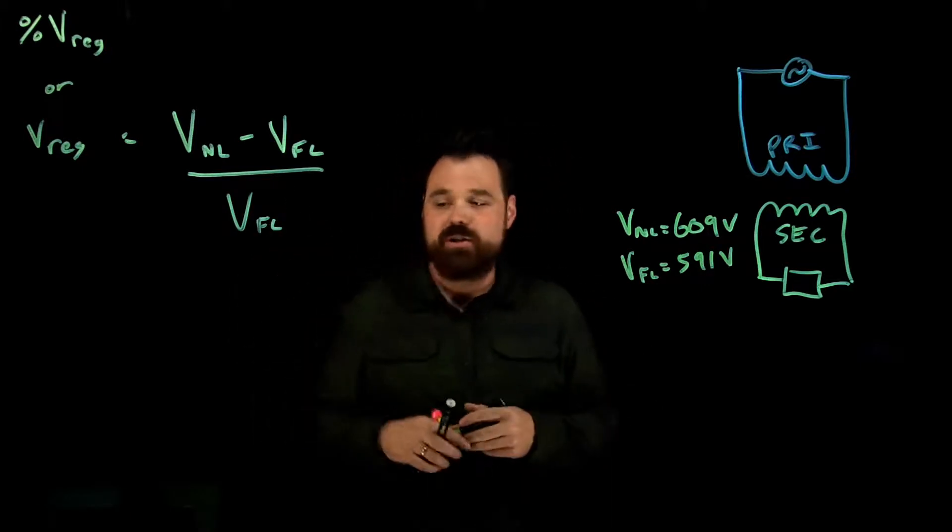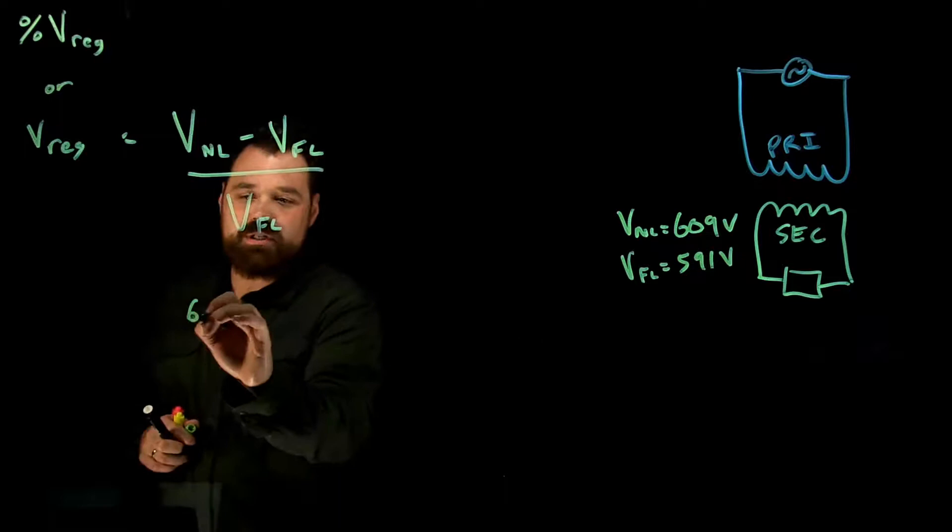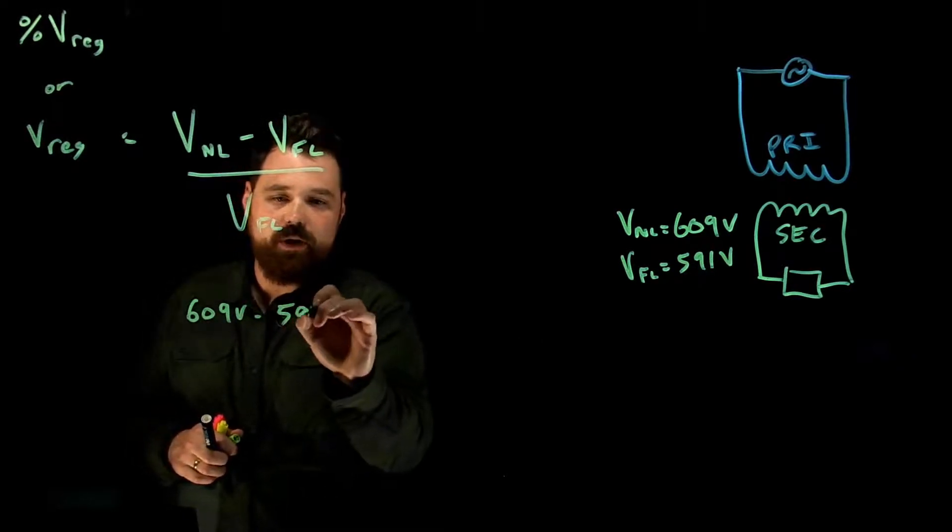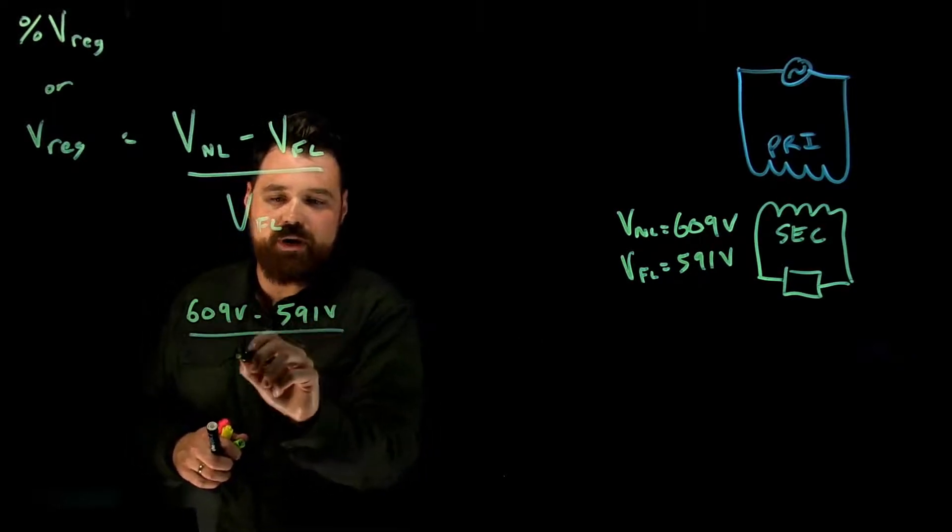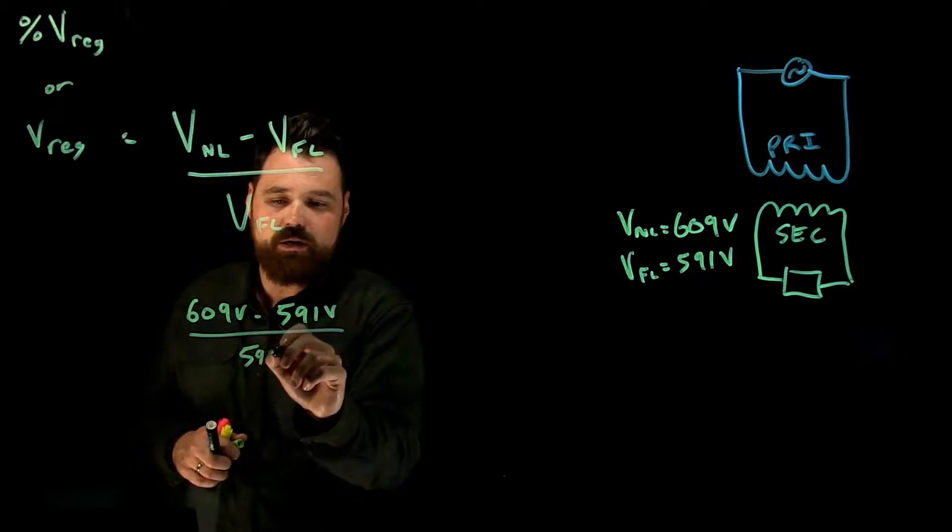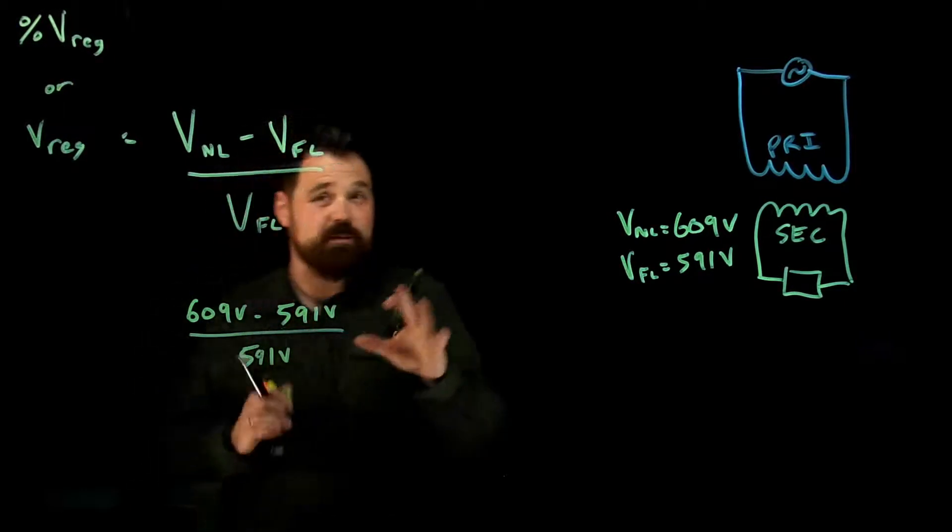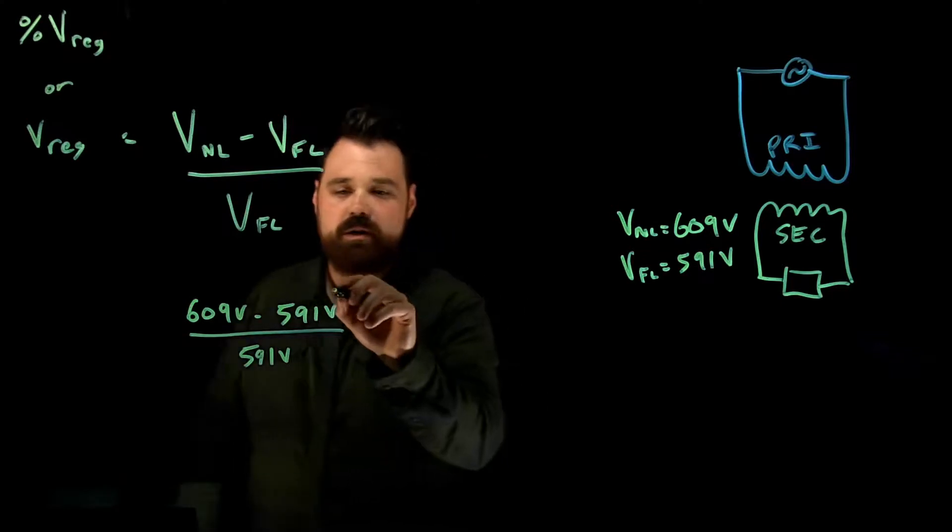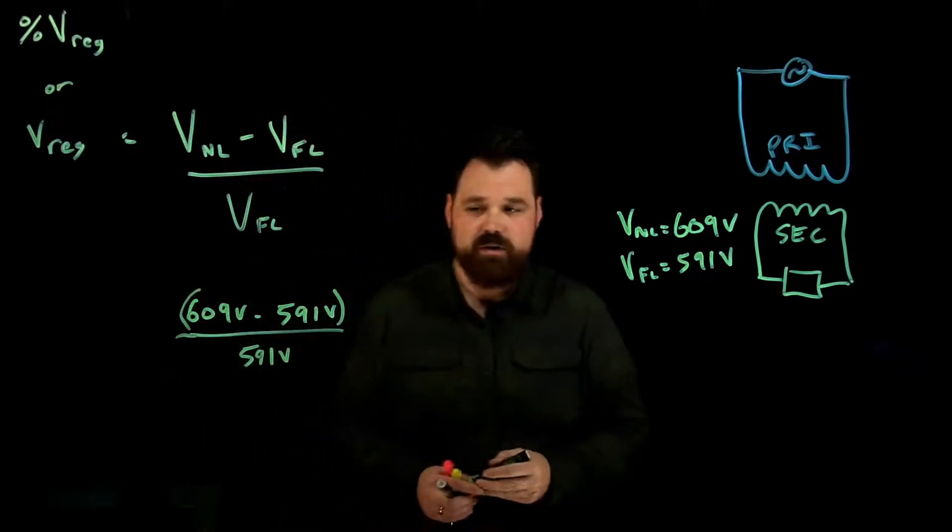And what would happen when we punch that into our formula, that would go 609 volts minus 591 volts divided by 591 volts. And again, if we're punching this into our calculator, make sure we're throwing some brackets on the top half of that equation.